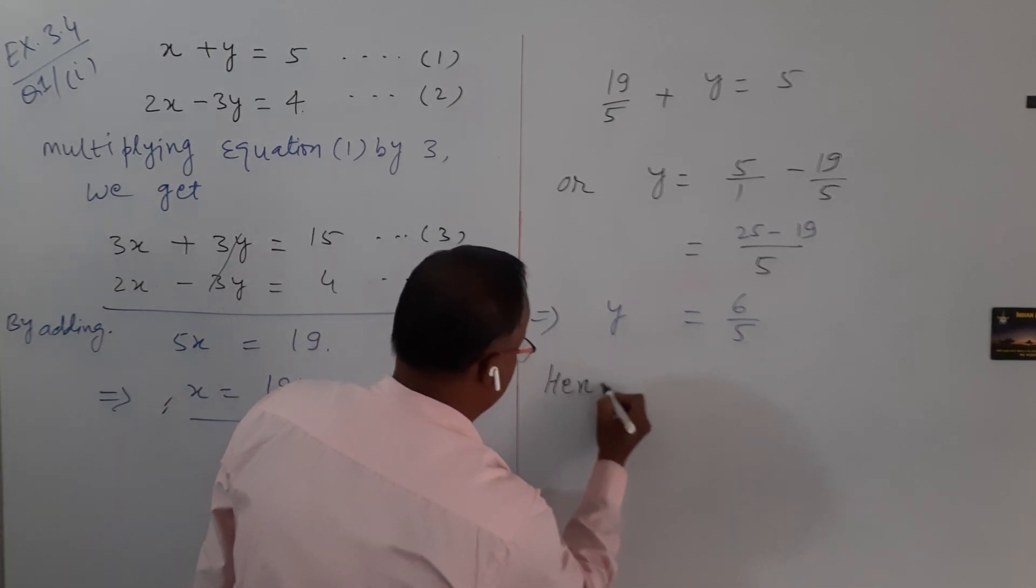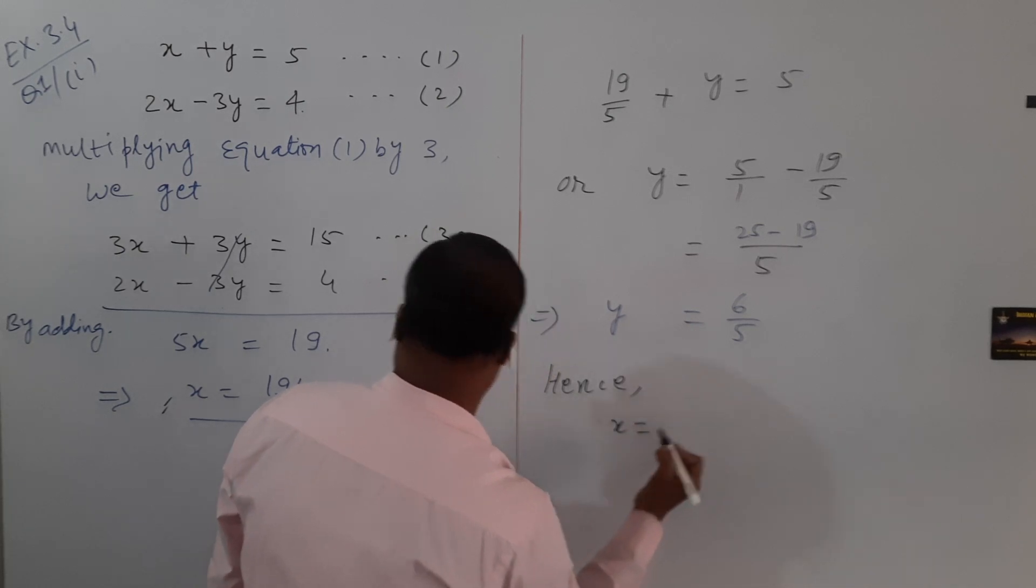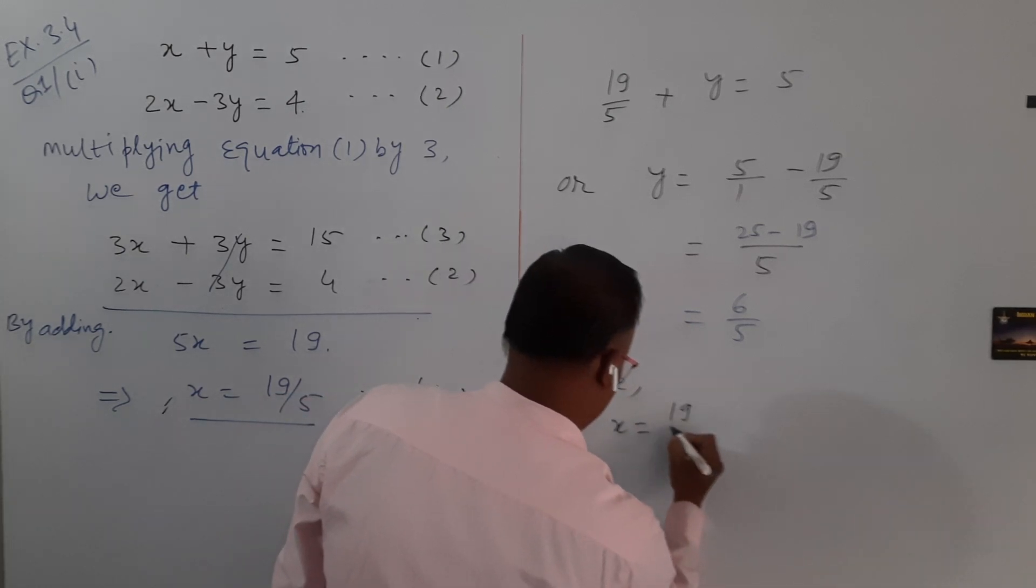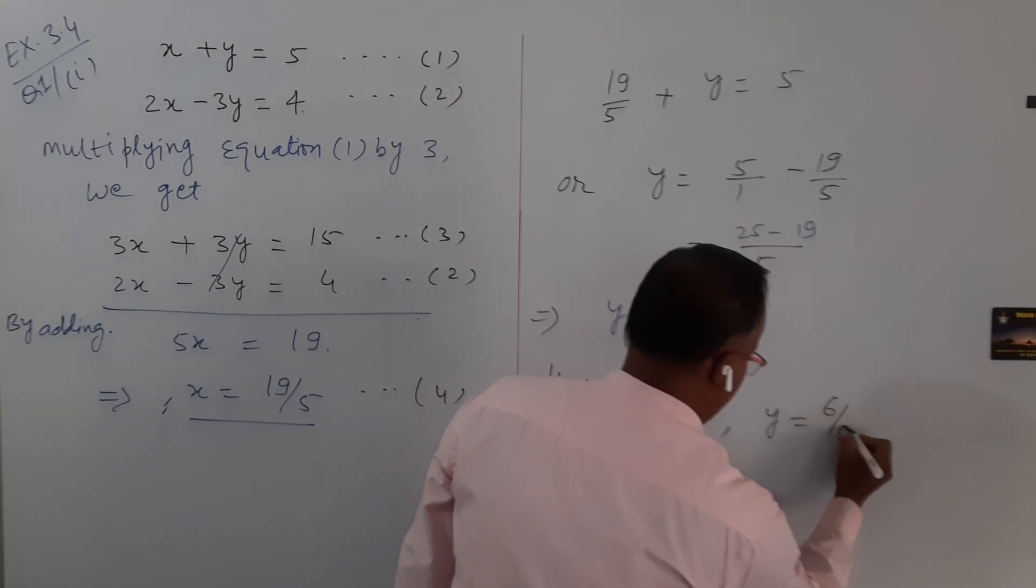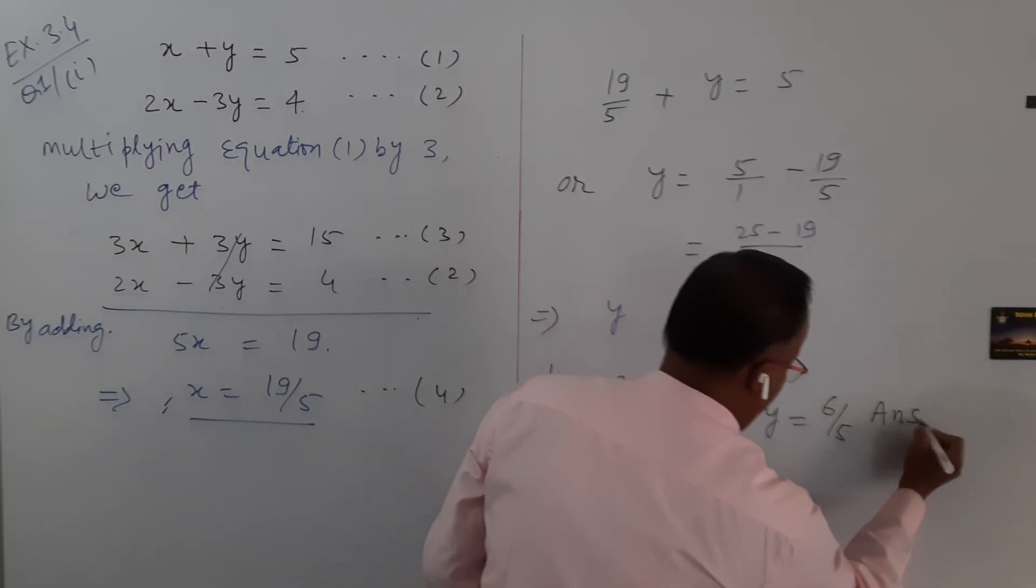Hence, the solution of the given equations is x equals 19 by 5 and y equals 6 upon 5. This is your answer.